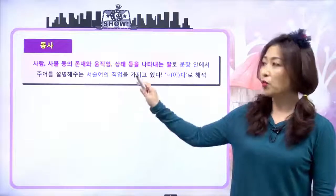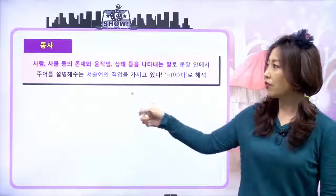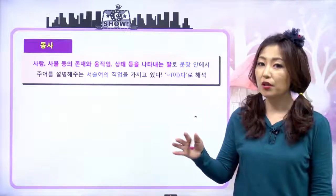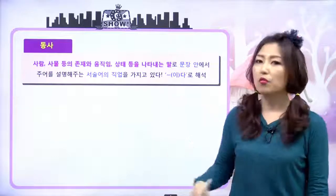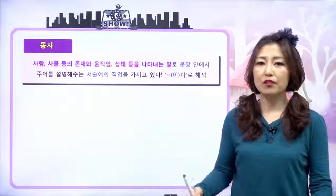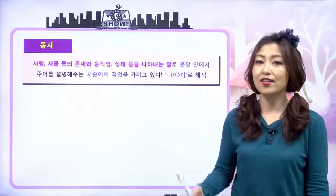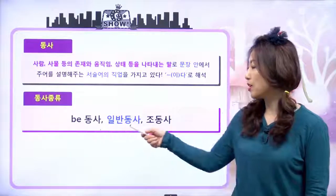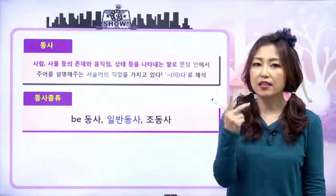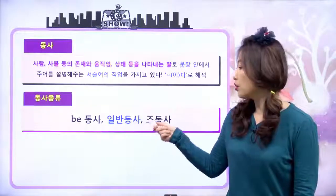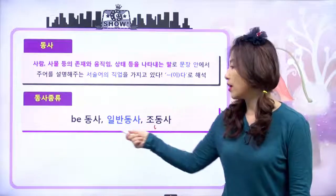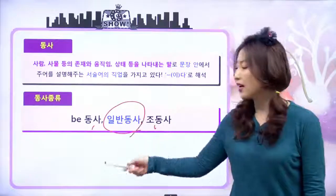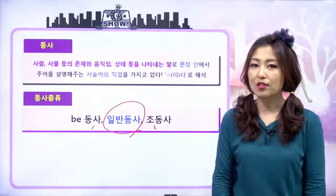그 전에 우리가 동사에 대해서 했던 거 빨리 Quick Review. 동사는 주어를 설명해주는 역할을 한다라고 했고, 이다로 해석되고, 설명해줄 때 동작 상태 이런 것들. 동사의 종류는 비동사, 일반 동사, 조동사 세 가지 있다라고 했었고, 조동사와 비동사를 제외한 나머지를 우리가 일반 동사라고 부른다고 했어요.